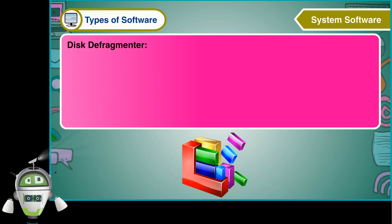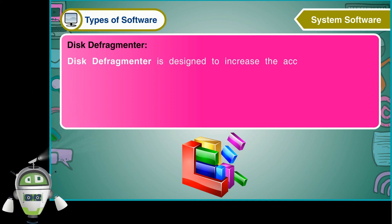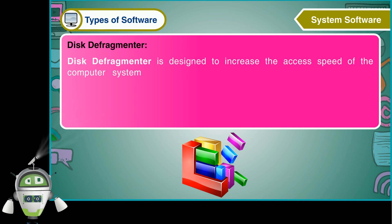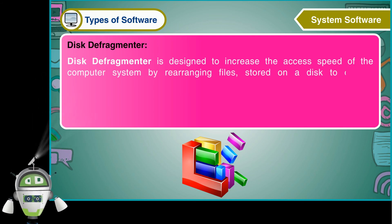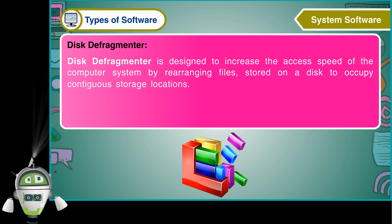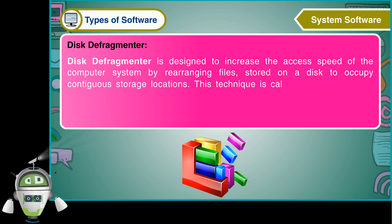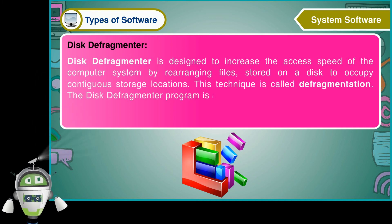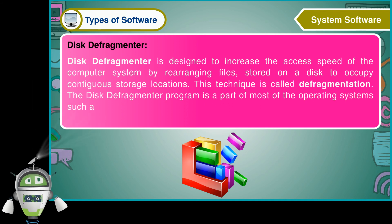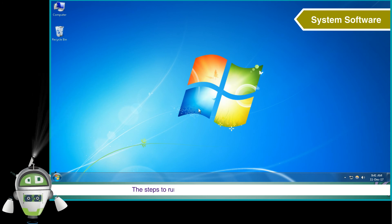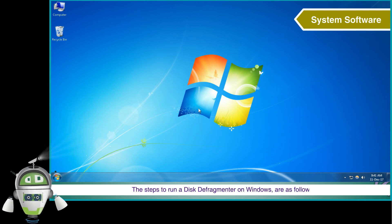Disk Defragmentor is designed to increase the access speed of the computer system by rearranging files stored on a disk to occupy contiguous storage locations. This technique is called defragmentation. The Disk Defragmentor program is a part of most operating systems such as Windows. The steps to run a disk defragmentor on Windows are as follows.